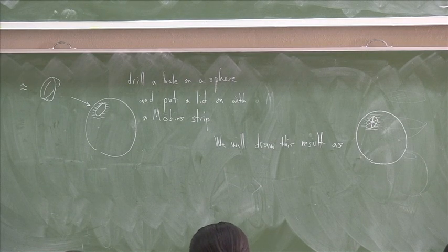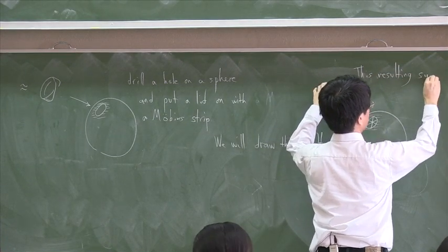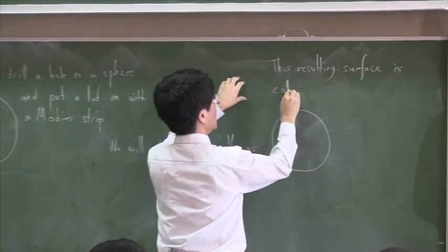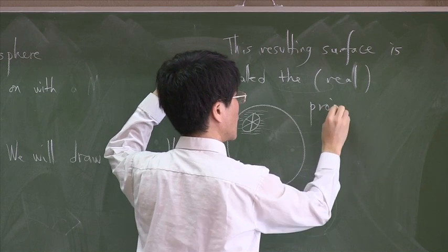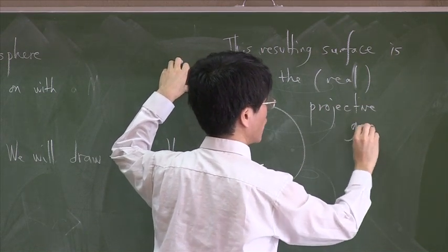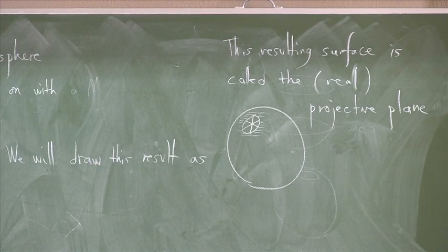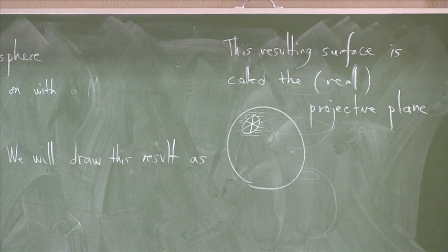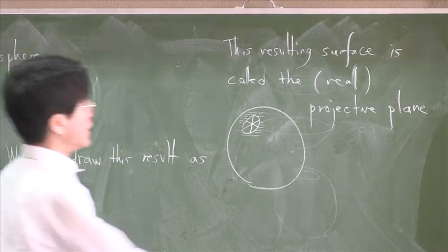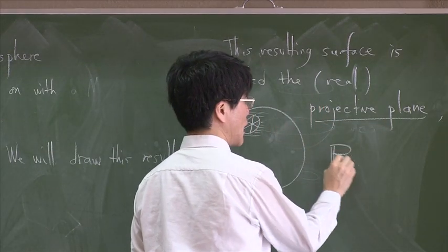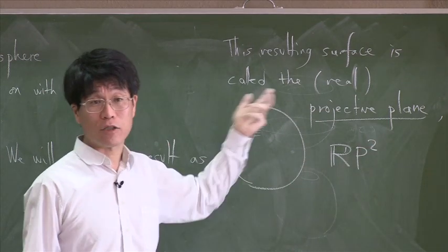And this resulting surface, closed surface, mind you, is called the real projective plane. There was, there still is, a beautiful area of geometry called projective geometry, which was organized in the 19th century. And the projective plane is where the projective geometry takes place. Real, because there is something called complex projective plane, which I shall not discuss in this course.